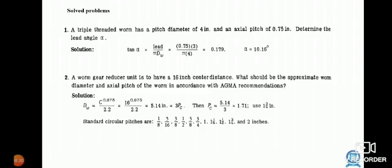A worm gear reducer unit is to have a 16 inch center distance. What should be approximate worm diameter and axial pitch of the worm according with AGMA recommendation? Solution: D_W = C^0.875 / 2.2 = 5.14 inches = 3P_C.